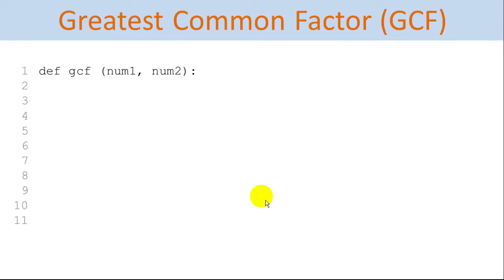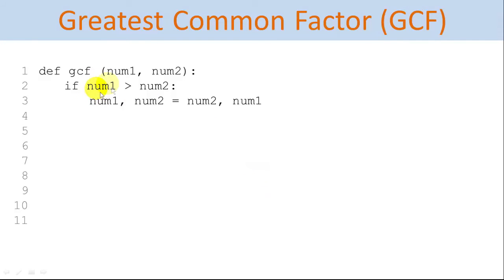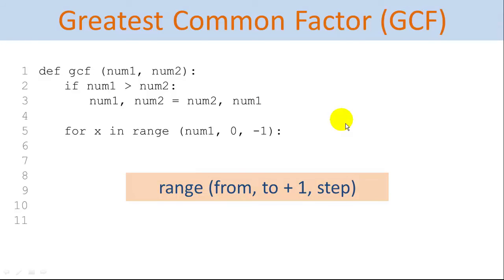We'll define a function called GCF that accepts two numbers, num1 and num2. Our first step is to compare the two numbers and make sure that num1 is the smaller of the two. If num1 is greater than num2, then we'll swap the two numbers, so now we know that num1 is the smaller of the two.